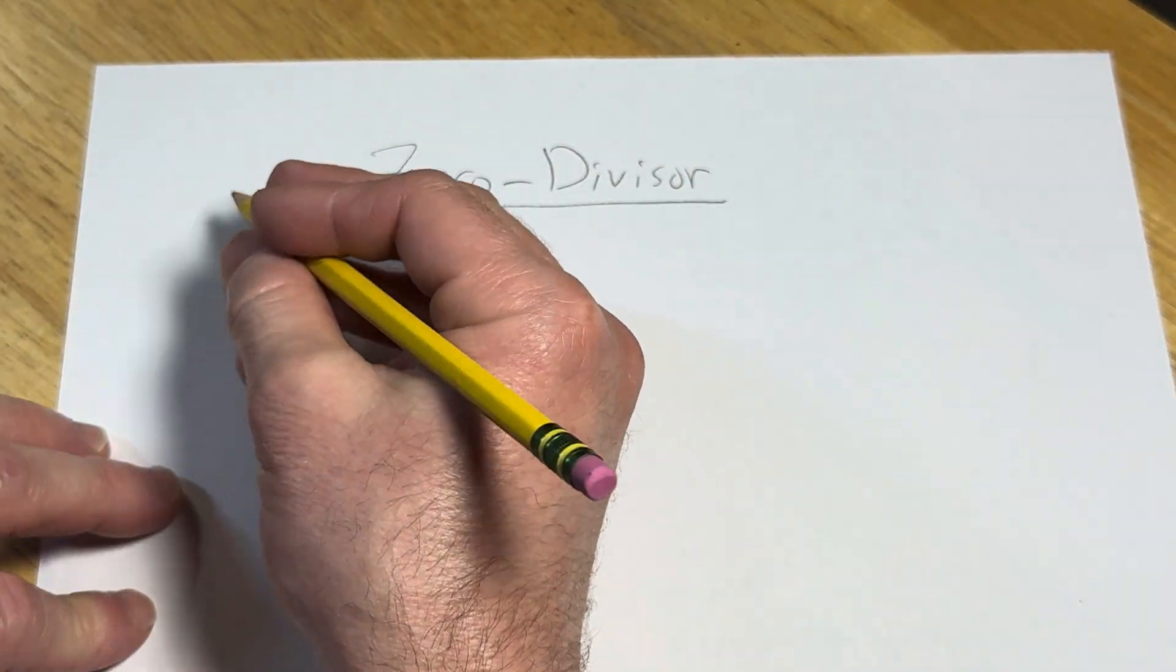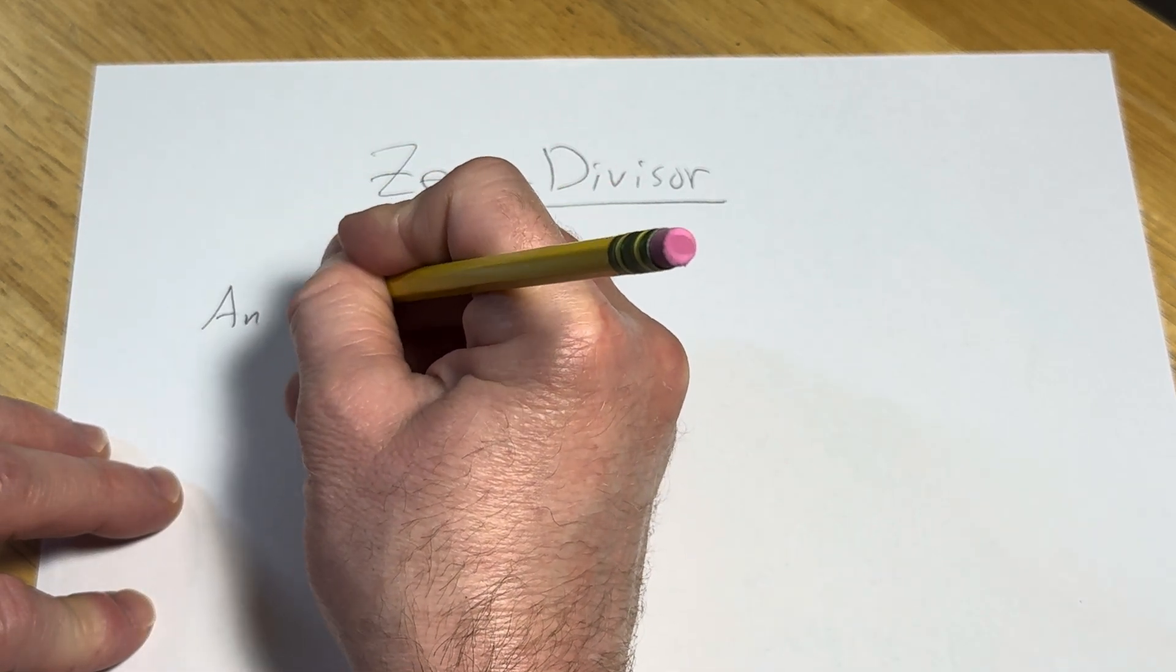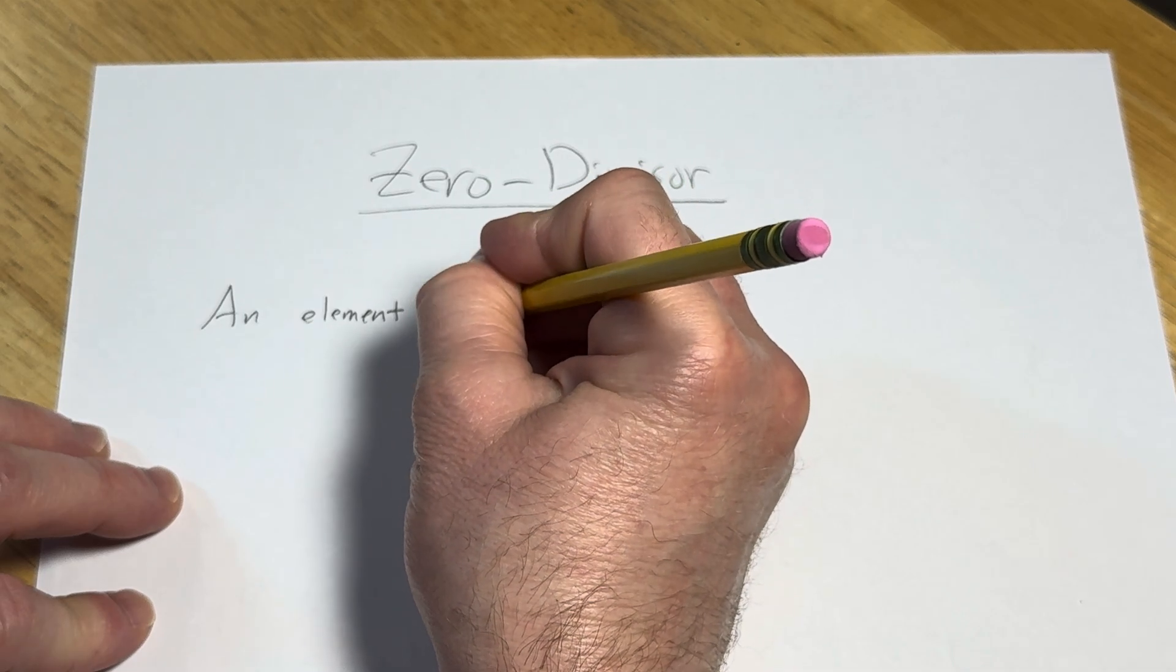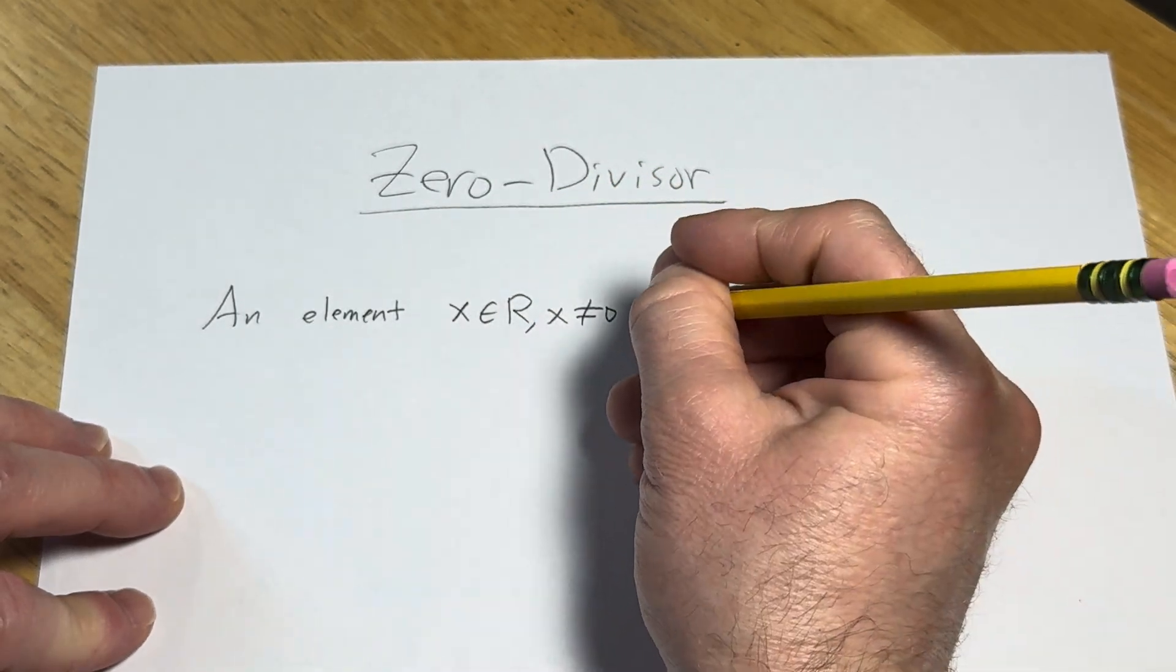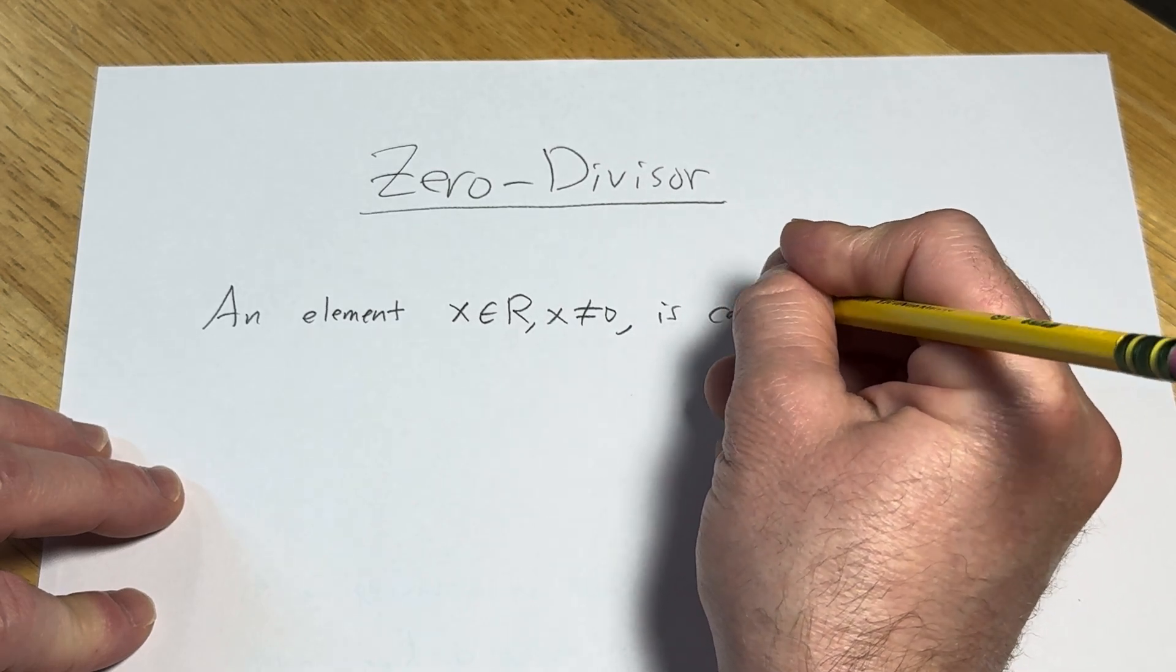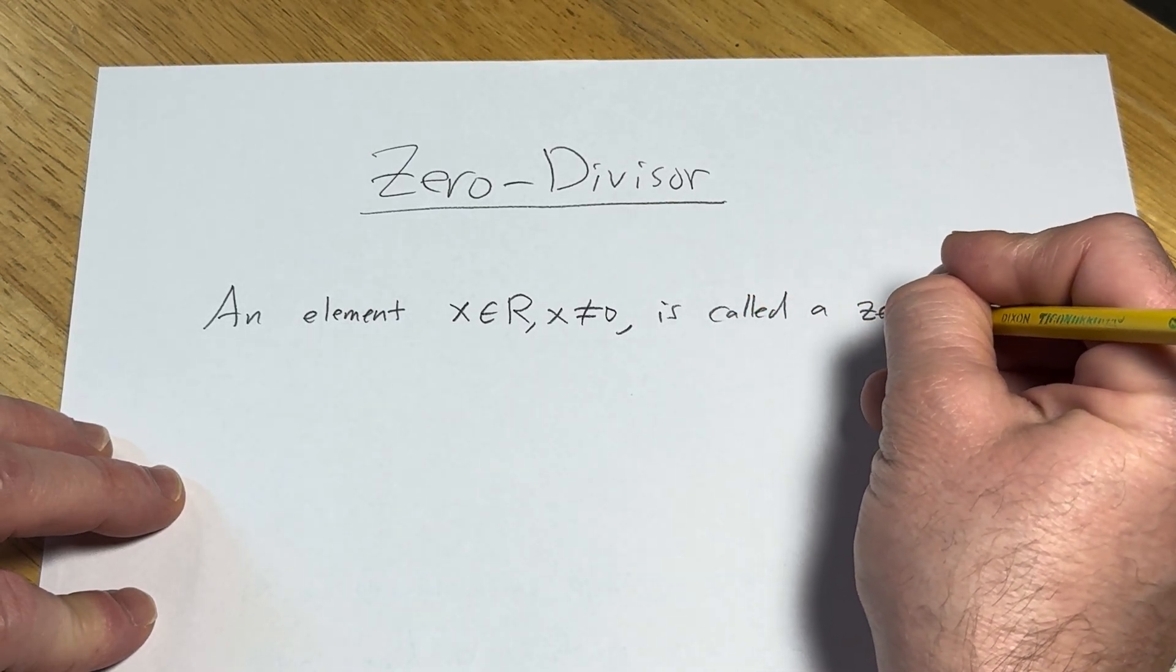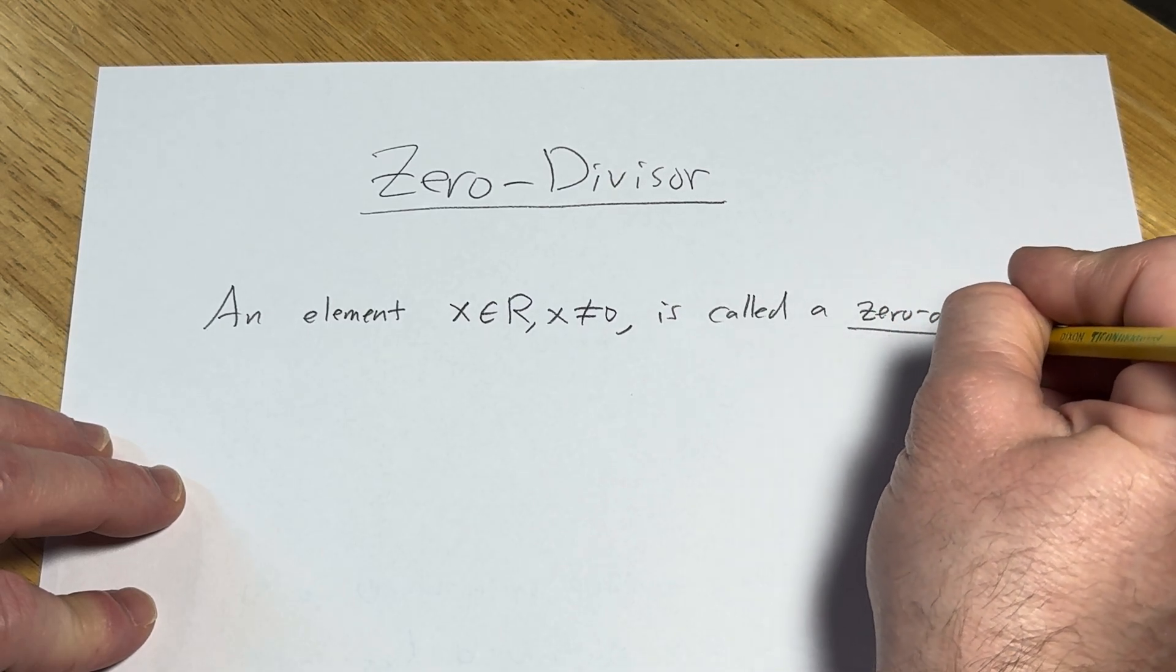So we're going to say an element x in R, x not equal to zero, is called a zero divisor.